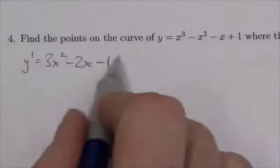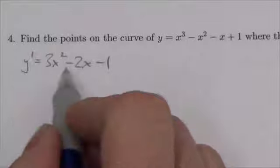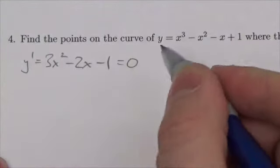So once I've got the derivative, remember this is the function that gives me the slopes of the tangent lines here, I can set this equal to zero.